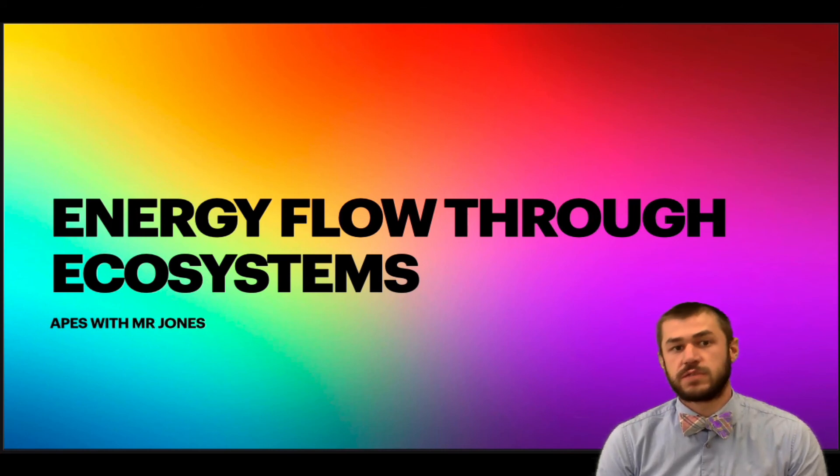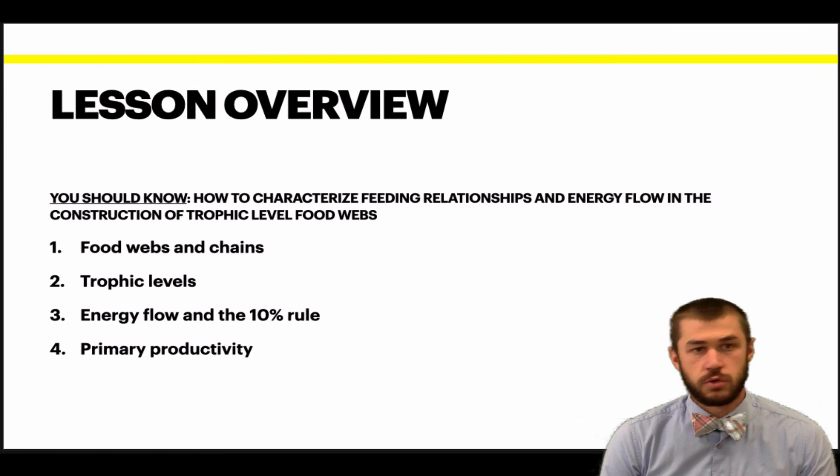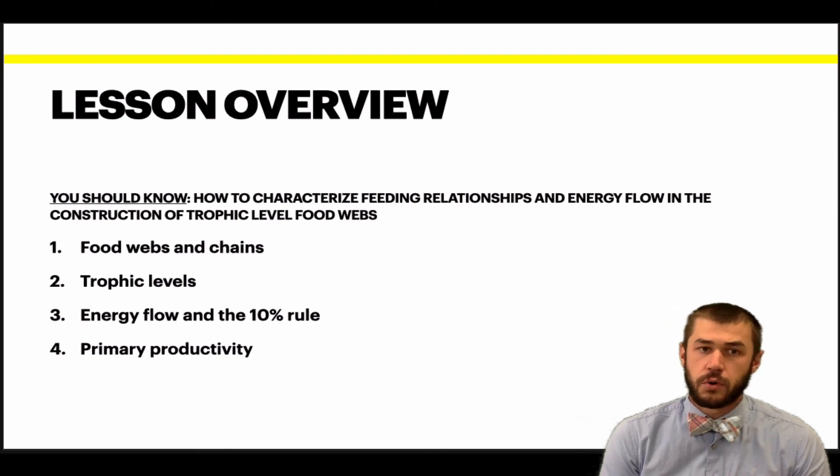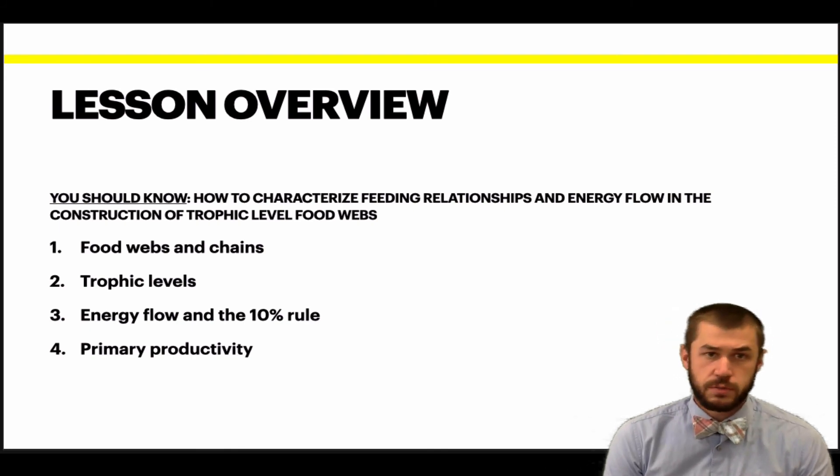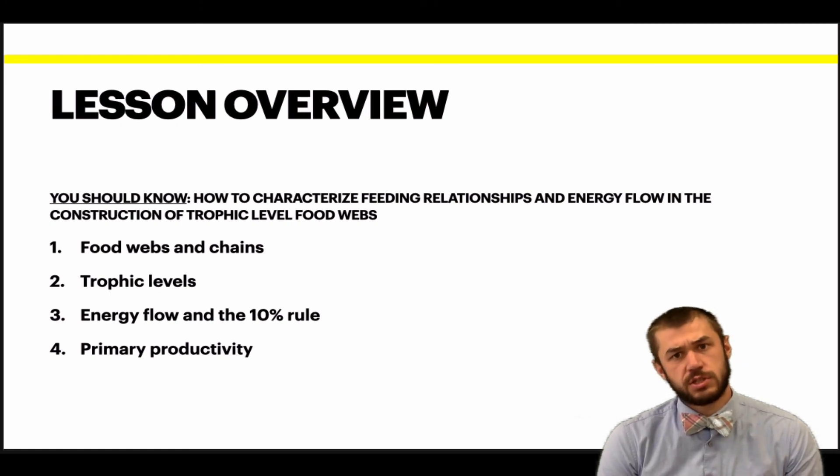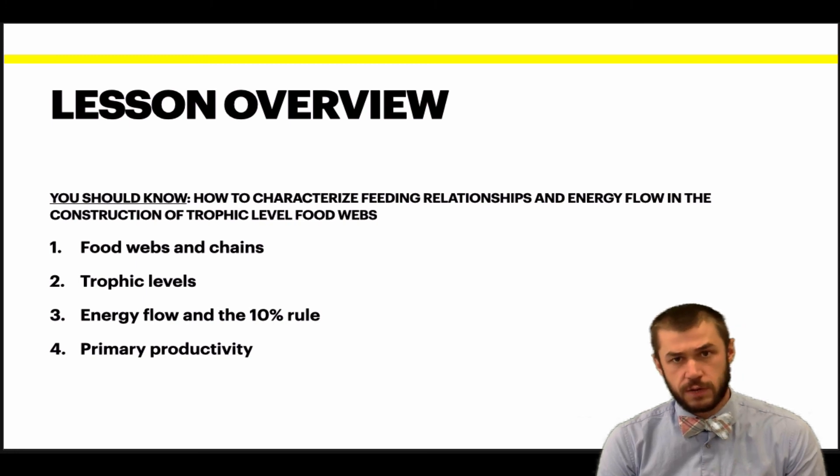Today we're going to talk about how energy flows through ecosystems. The lesson overview: the things that you should understand by the end of the lesson are food webs and food chains, trophic levels, energy flow and the 10% rule, and primary productivity, which ultimately should allow you to understand how to characterize the feeding relationships and energy flow as you construct and look at trophic level food webs.